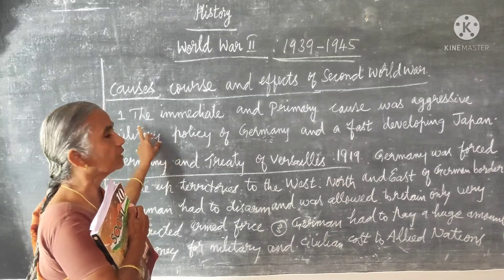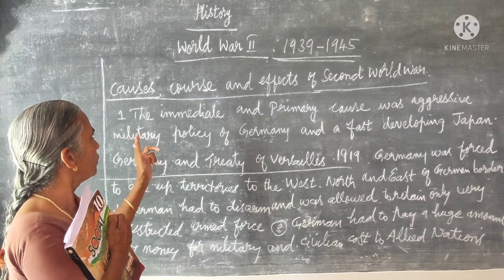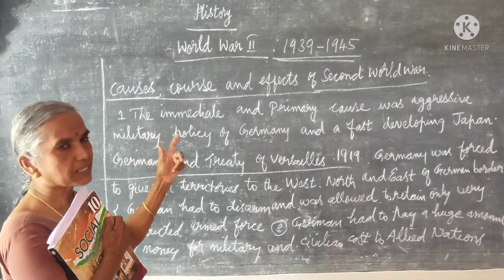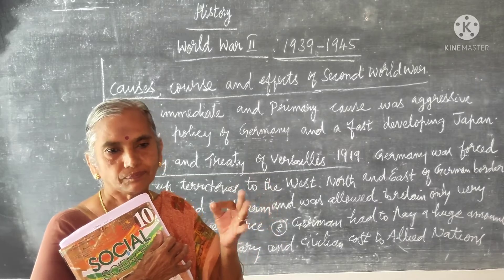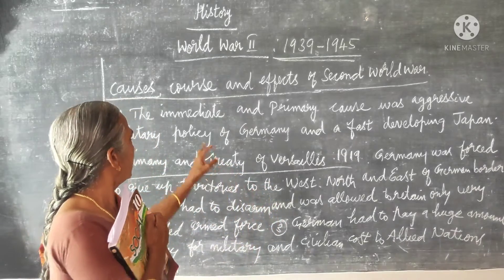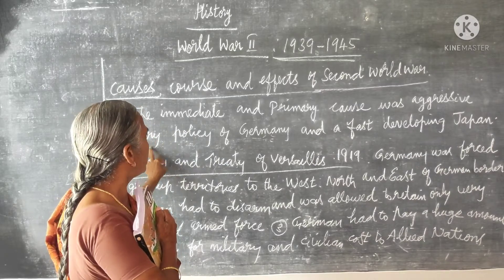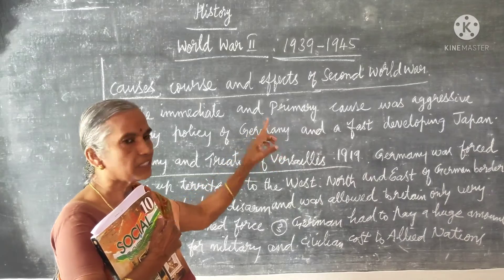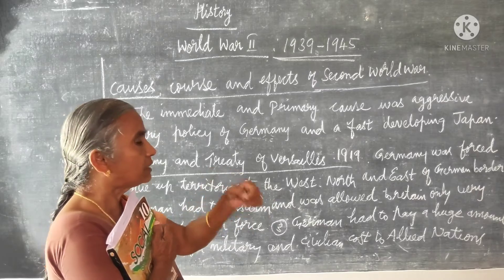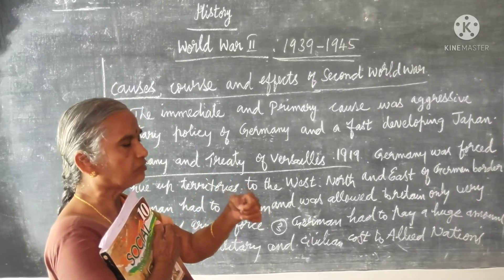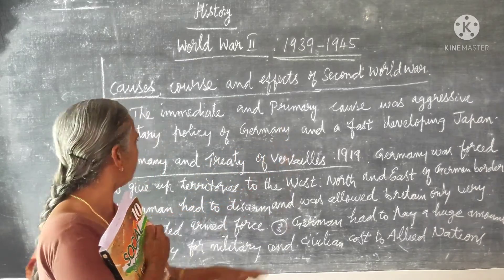The duration of the Second World War was 1939 to 1945. Let us see what were the causes, courses and events of the Second World War. The primary and immediate cause was the aggressive military policy of Germany and the fast-developing Japan.